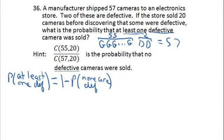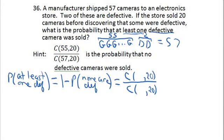So how would you calculate the probability that none are defective? Well, you sold 20 — it's like drawing 20 cards out of a deck. You've got 57 cameras, so it's like a 57-card deck and you're drawing 20 out. It's analogous to the card problem. We know order doesn't matter; you don't care what order the cameras are drawn. So these are combinations — order doesn't matter.